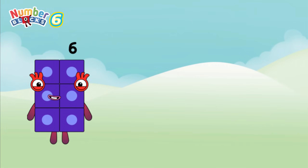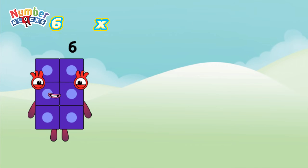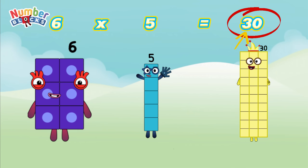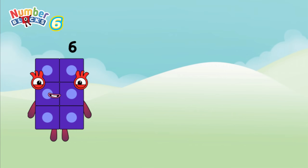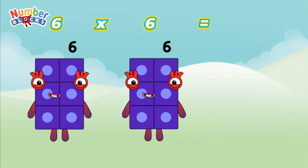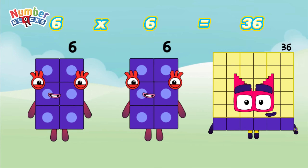6 multiplied by 5 is equal to 30. Or 6 times 5 is equal to 30. 6 multiplied by 6 is equal to 36. Or 6 times 6 is equal to 36.